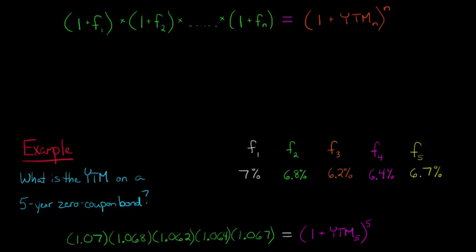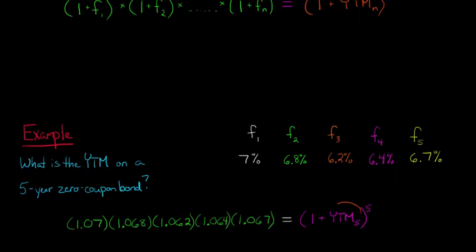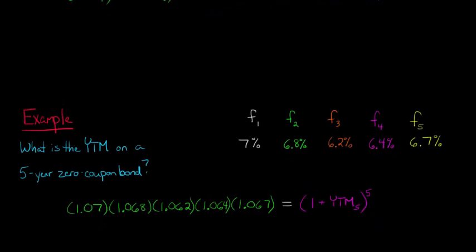So what we're going to do to make this, what we want to do is get the yield to maturity just alone by itself, right? Now we could subtract 1 from each side, and we're going to do that in a minute. But we've got to get rid of this exponent. So what we can do here, let me just give ourselves a little more space.